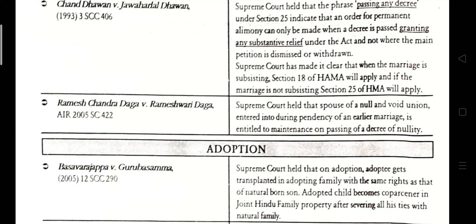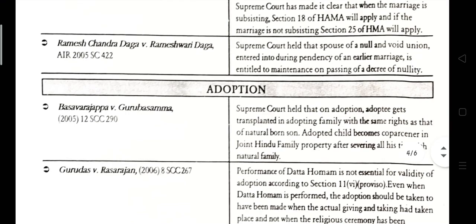Ramesh Chand Daga vs. Rameshwari Daga, AIR 2005, Supreme Court 422. The Supreme Court held that the spouse of a null and void union entered into during the pendency of an earlier marriage is entitled to maintenance on the passing of a decree of nullity.